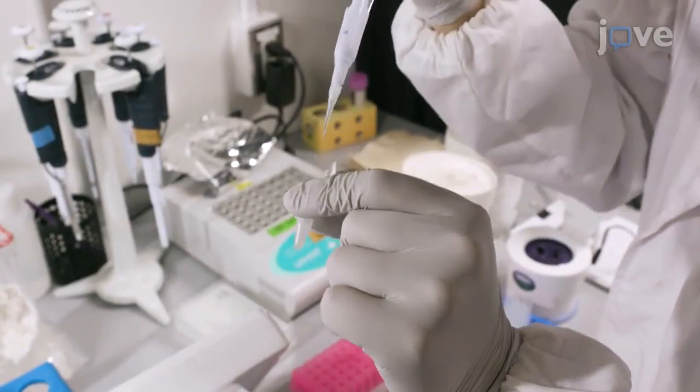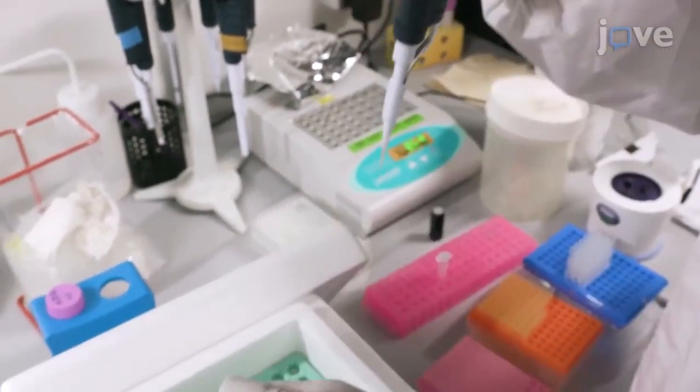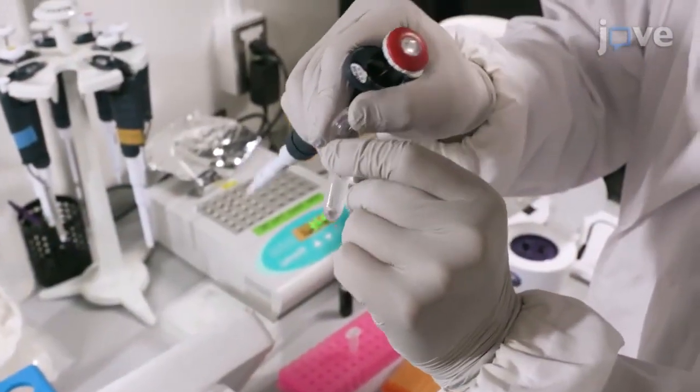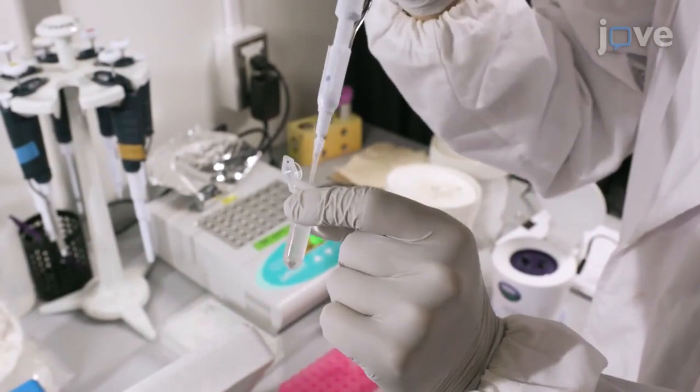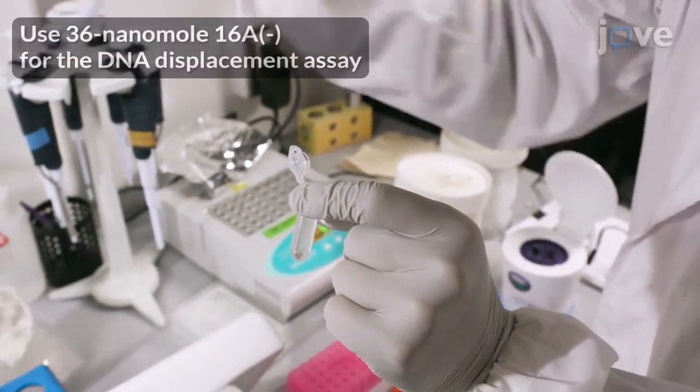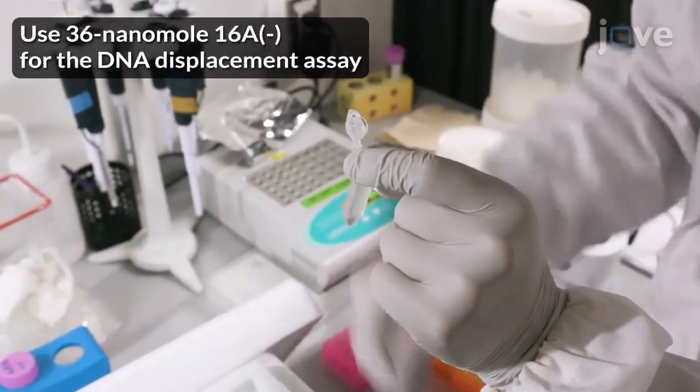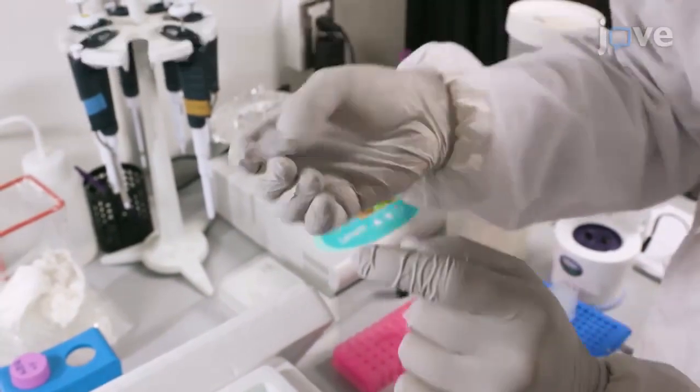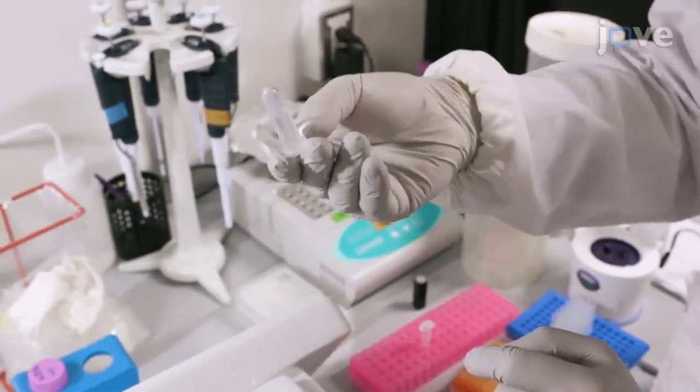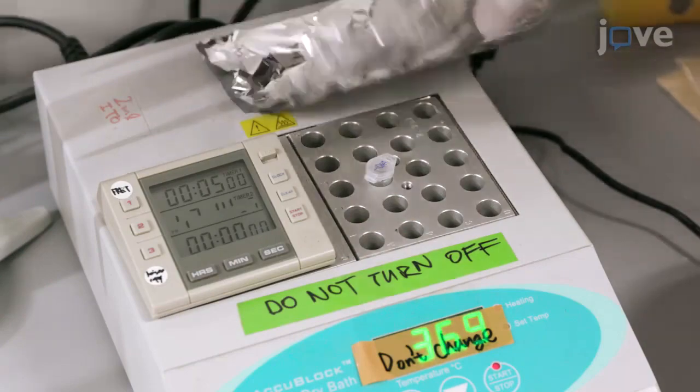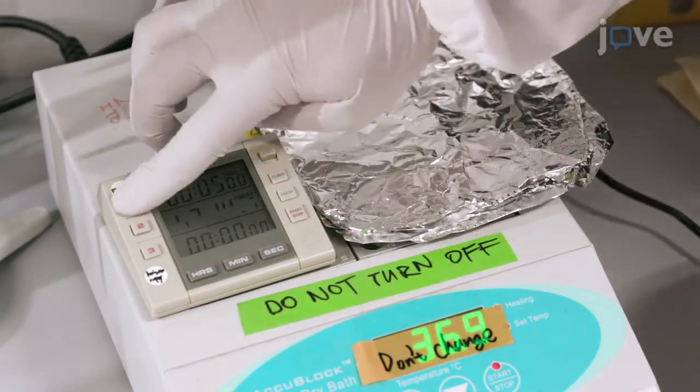To begin, prepare the reaction buffer A according to the text protocol. Next, add 36 nanomole 16FA-oligonucleotide to the buffer for the DNA pairing assay. Incubate the mixture at 37 degrees Celsius for 5 minutes.